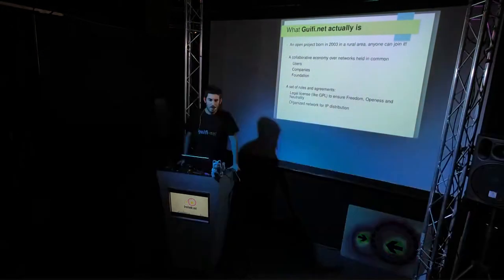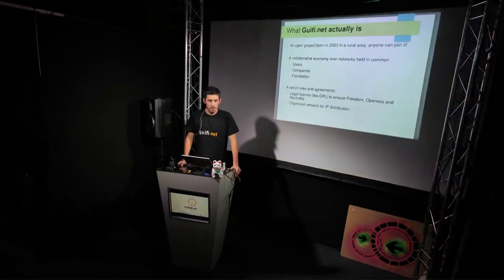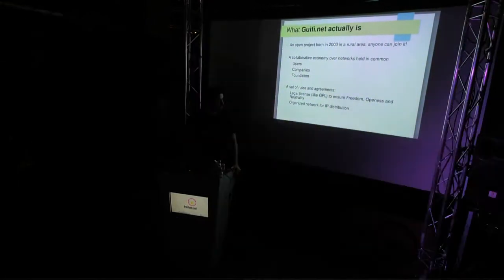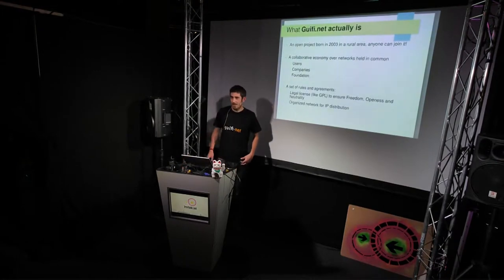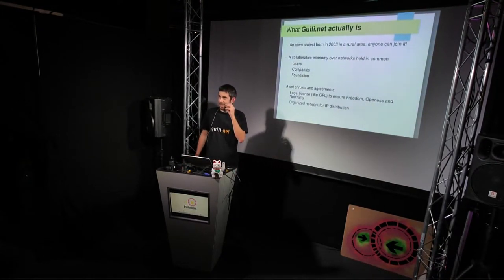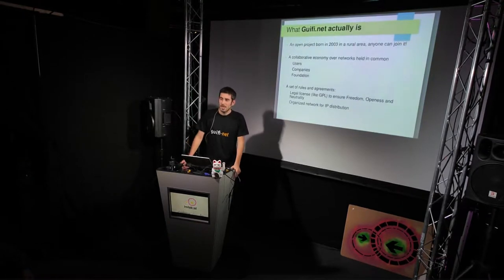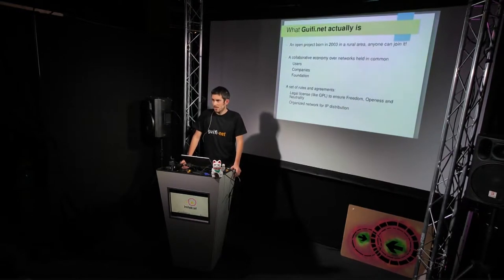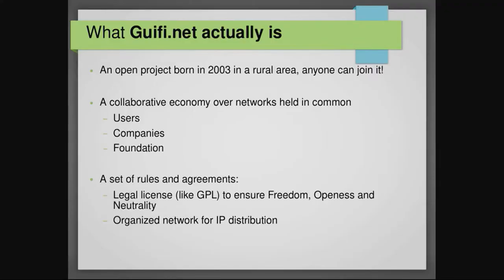So GIFINET is an open project, it's just a name, it's a logo, where anyone can join. The most important thing is that GIFINET is a set of rules and agreements. There is a license, which is similar to the GPL for software, that we call XOLN. It ensures that the network is always free, open, and neutral — so anyone who joins the network is accepting this license.